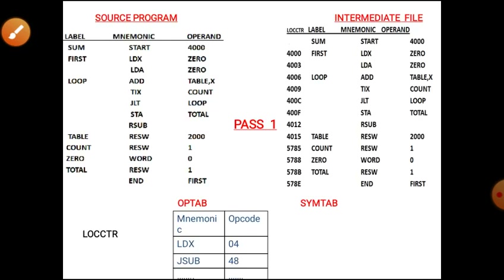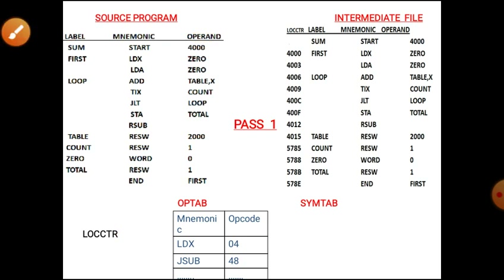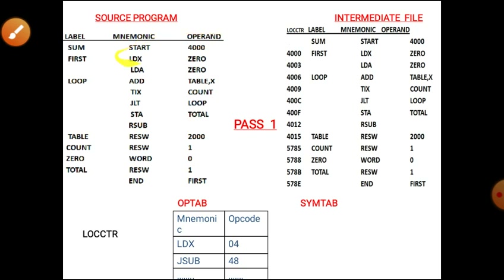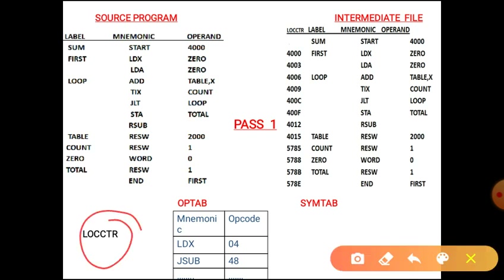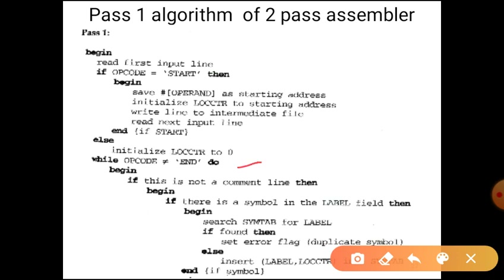For example, if the source program has a START directive, the operand value — say 4000 — is assigned to LOCCTR, and this complete line is written to the intermediate file. Then read the next line. Note that START is optional; if there is no START, LOCCTR is assigned zero. The algorithm then checks whether the END of the source program has been reached; if not, different steps are repeated.